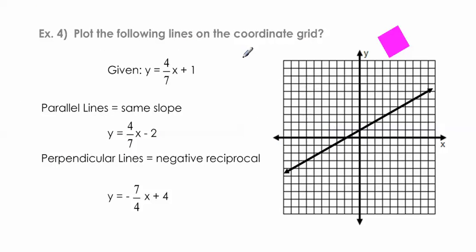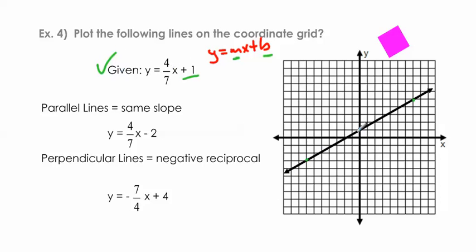Let's plot the following lines on the coordinate grid. I'm giving you y equals 4/7x plus 1. The slope is 4/7 and the y-intercept is plus 1. Starting at 1 on the y-axis and plotting the slope up 4 over 7, I arrive back on the same line. Going the other direction — down 4, back 7 — I land on another point. Connecting those three dots recreates the black line, proving this equation has already been plotted.